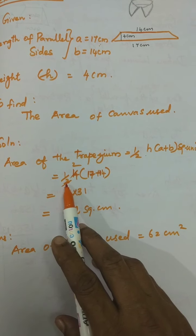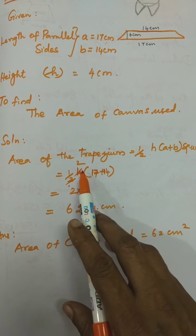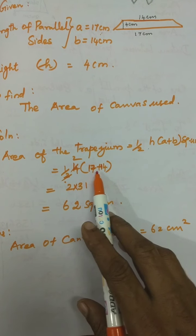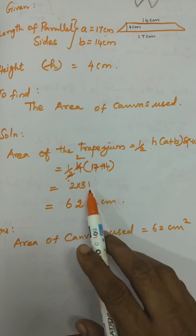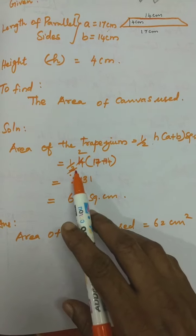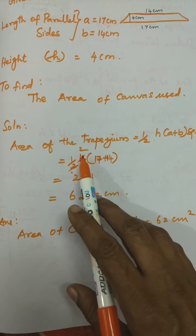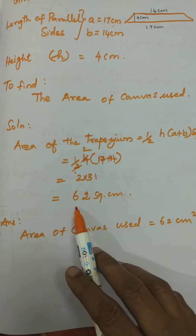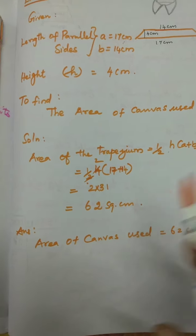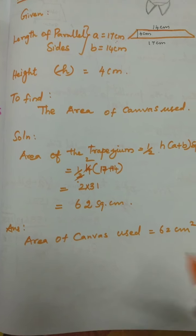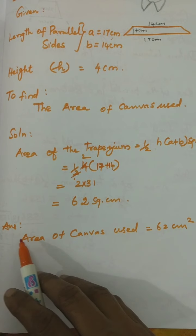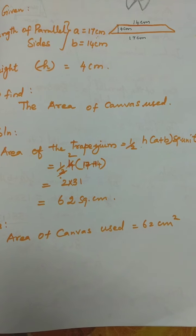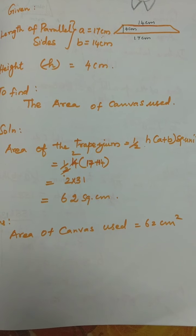You substitute H and A plus B: 4 into 17 plus 14. 17 plus 14 is 31. Then 2 and 4 get cancelled — 2 times. 2 into 31 is 62 centimeter square. So area of the canvas used is equal to 62 centimeter square.